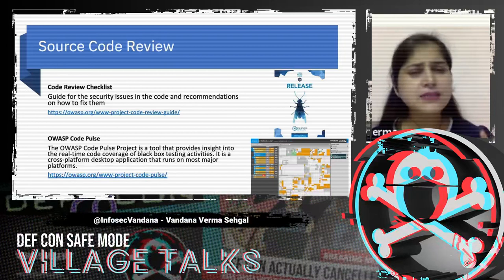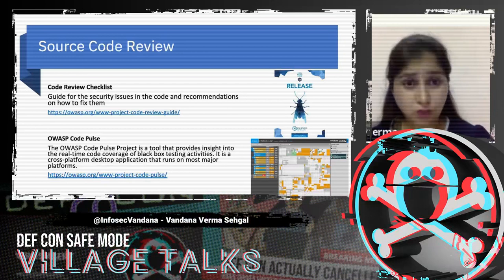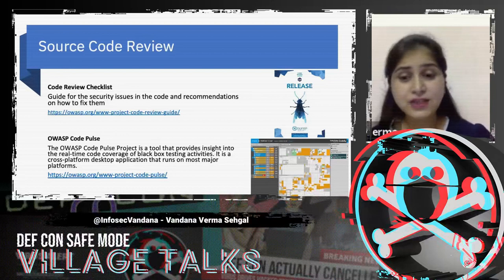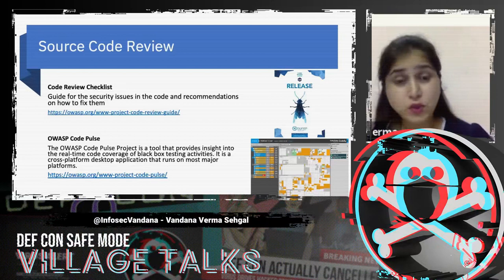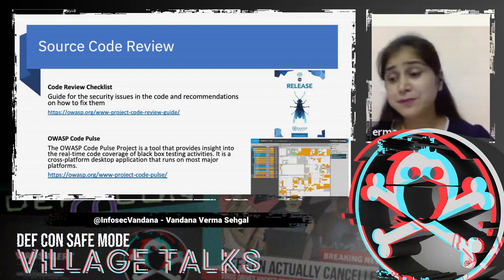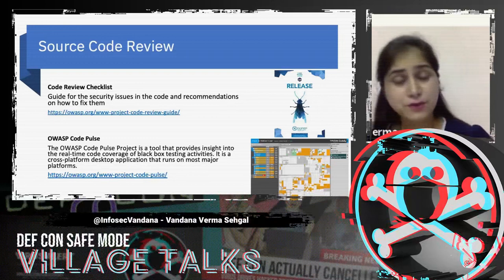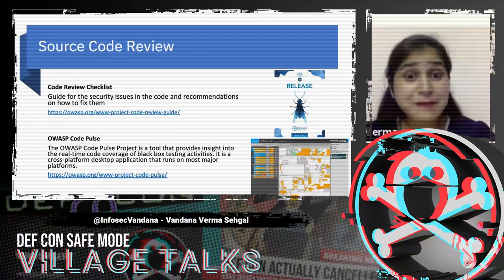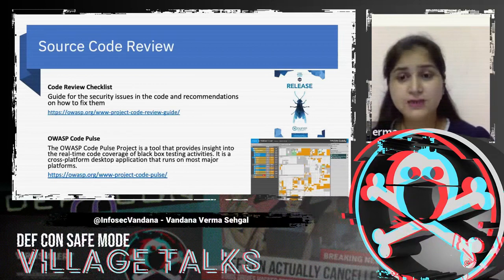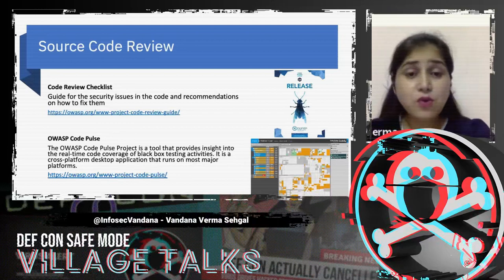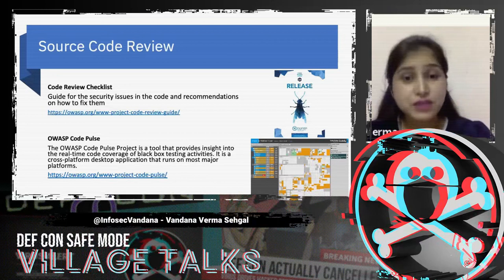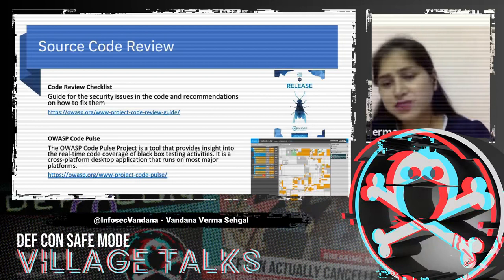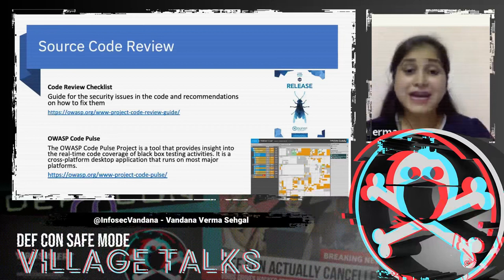The code review checklist is like an amazing checklist that provides guidance on what things should be fixed in code and what can be guided in. We can actually build our own checklist on top of it — for source code review, I have built my own checklist on top of the ones provided by the code review checklist. Similarly, there's another project called CodePulse, which is a project that helps in finding code which might be left behind. A continuous challenge with penetration testing or code review is that we don't know whether we have covered the whole application or not — it's purely a black box perspective.